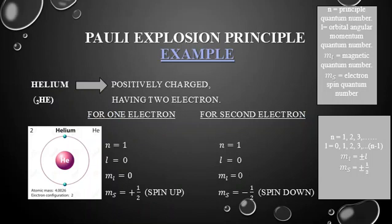An example of the Pauli Exclusion Principle: for a helium atom with two electrons, for the first electron n=1, l=0, ml=0, and ms=+1/2 (spin up). For the second electron n=1, l=0, ml=0, and ms must be −1/2 (spin down), since all four quantum numbers cannot be the same for both electrons.